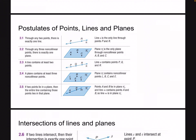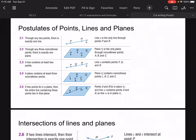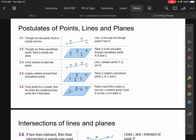Postulate 2.2 says through any three non-collinear — that's important — non-collinear points, there is exactly one plane. Postulate 2.3 says a line contains at least two points. So 2.1 and 2.3 are pretty similar: the first one says through any two points there is one line, and 2.3 says a line contains at least two points — kind of saying the same kind of deal.